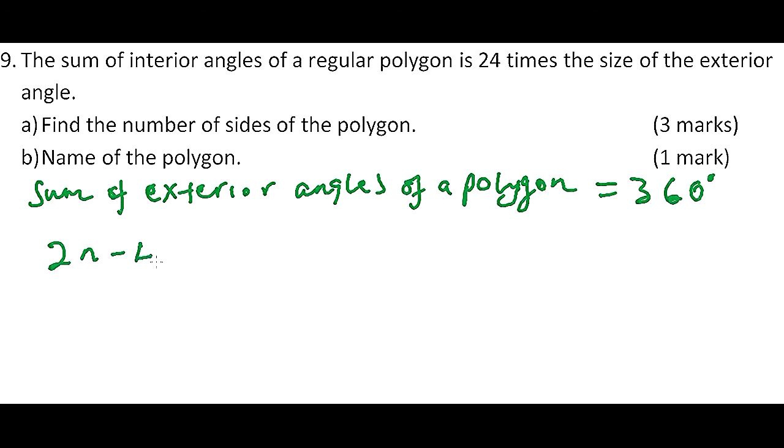So we can now connect: the sum of interior angles is given as (2n - 4) multiplied by 90. That is the sum of the interior angles equals 24 times the size of the exterior angle.